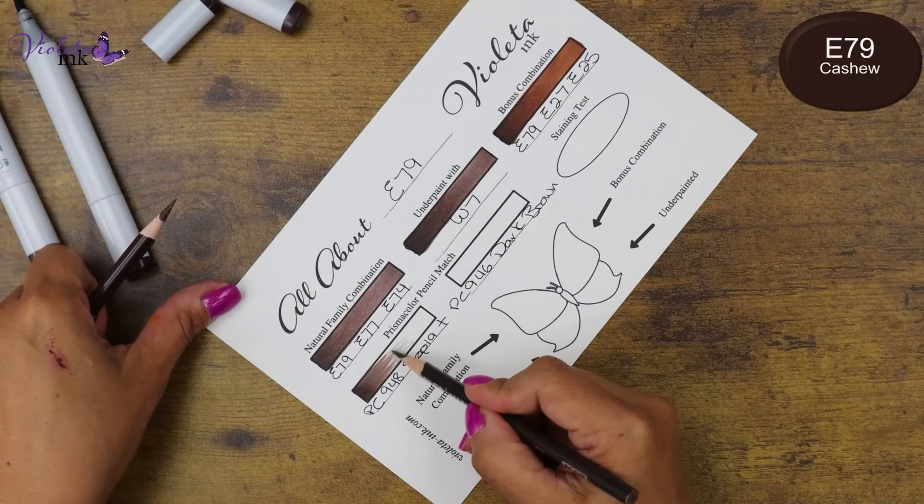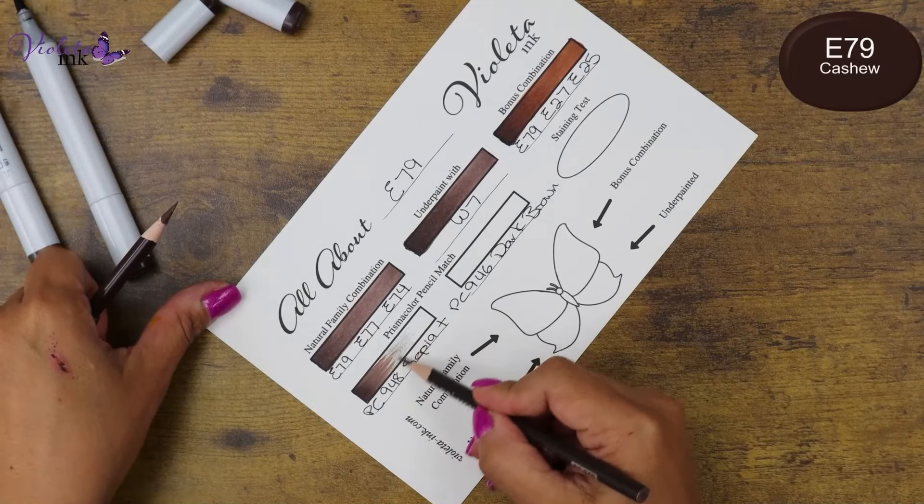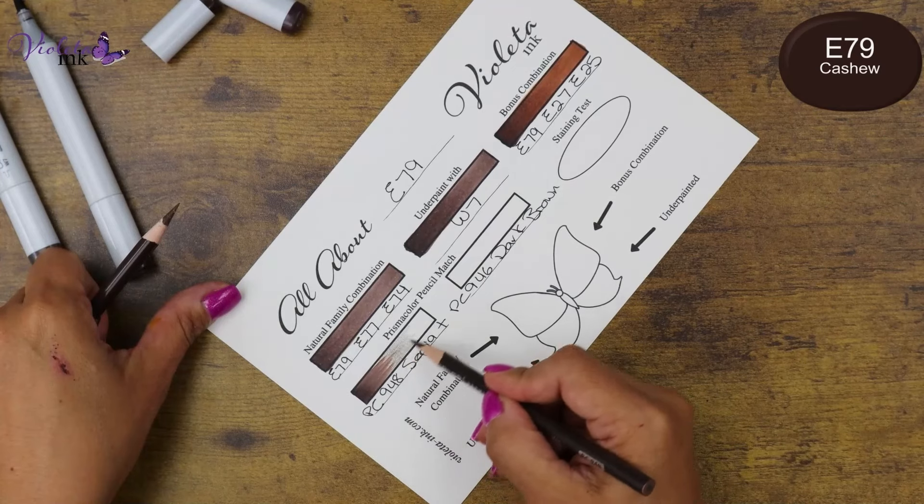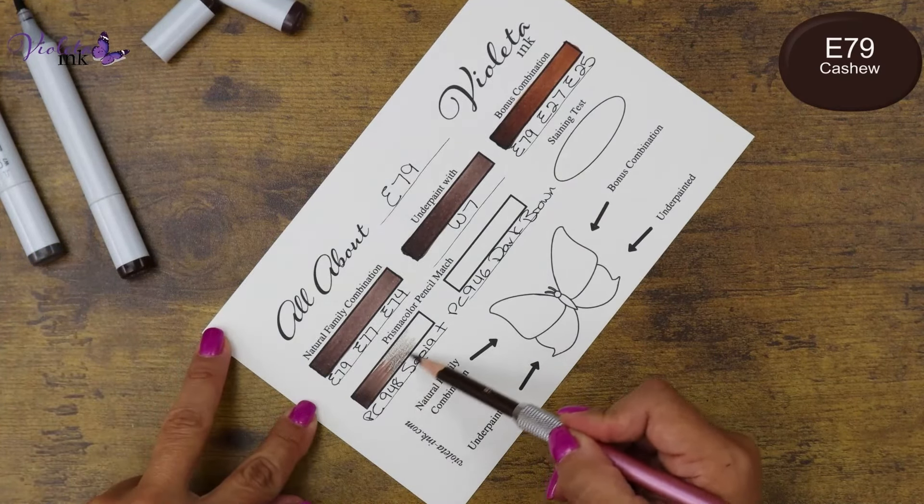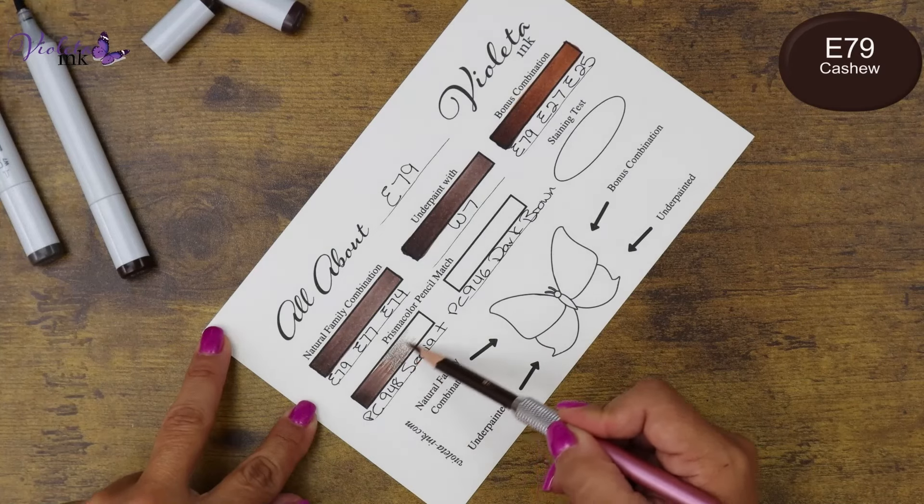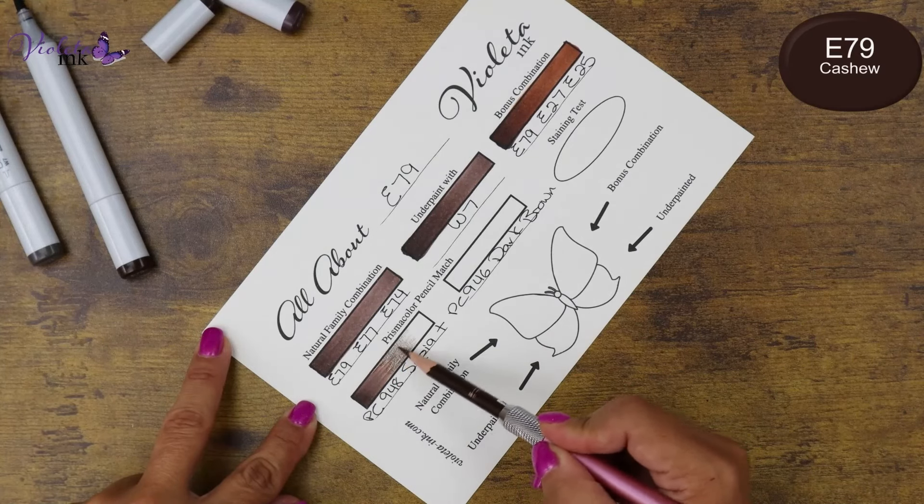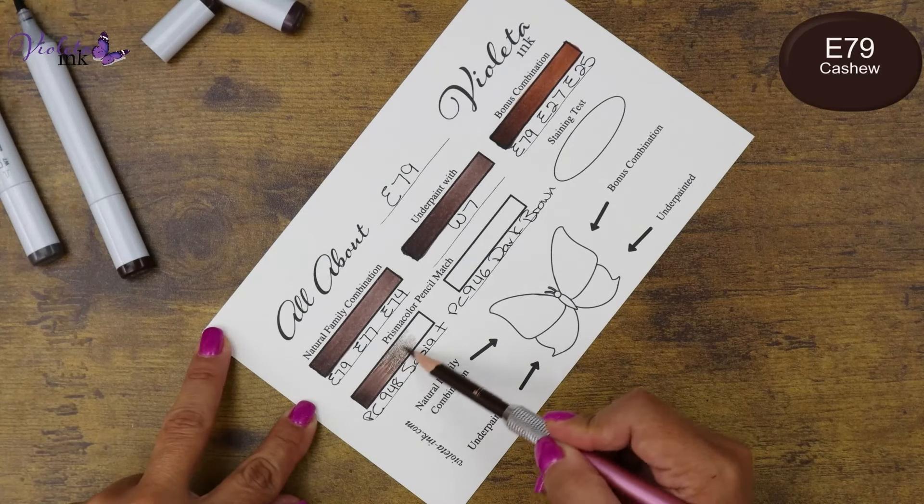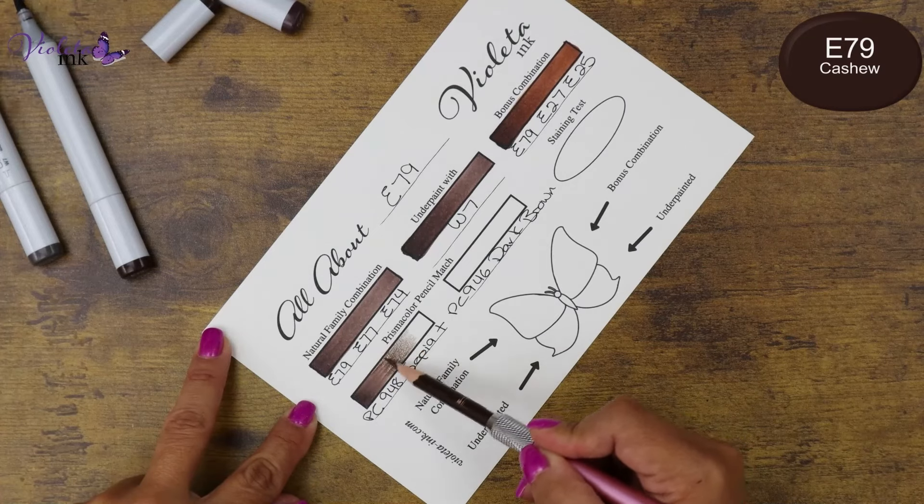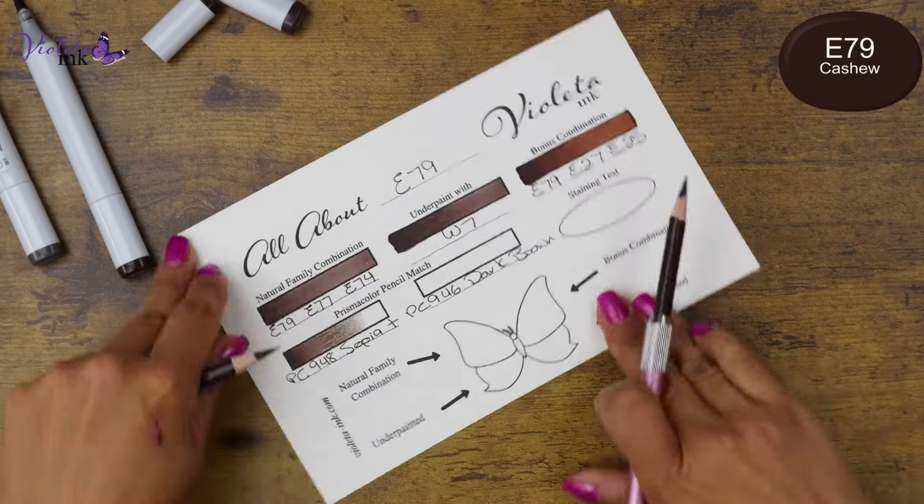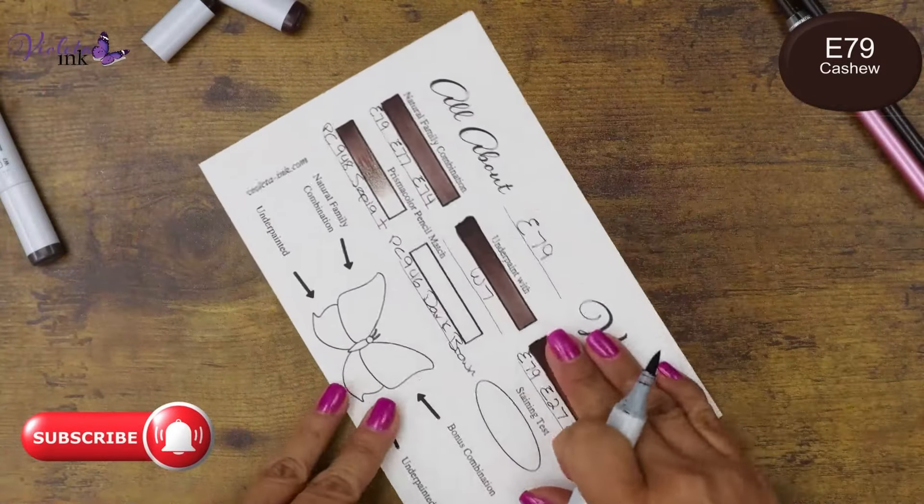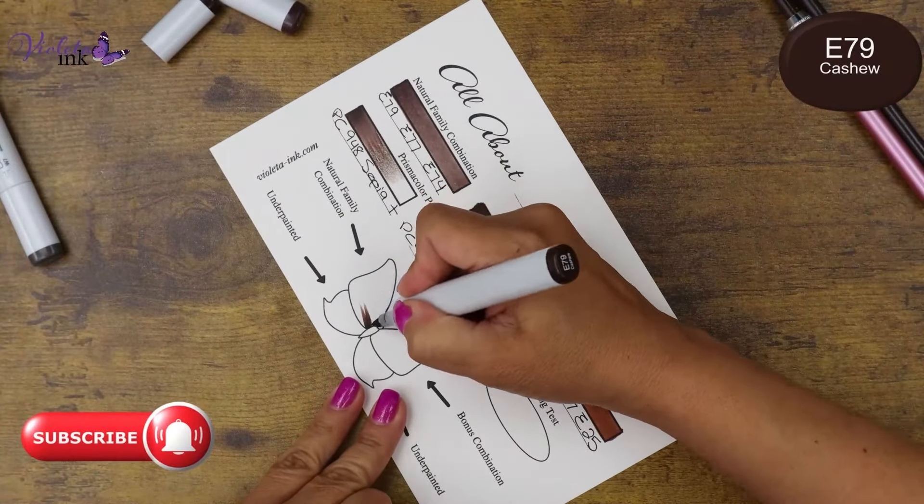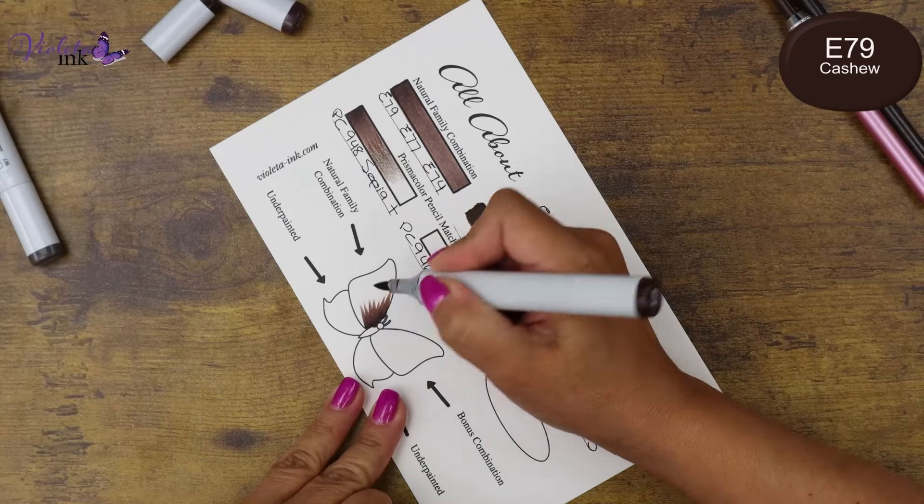I am using PC948 sepia first. I needed to give it the darkness, a little bit more of darkness. And then on top of it we're going to go with PC946 which is dark brown. I did not exactly like that one, but at that moment I thought it was good.